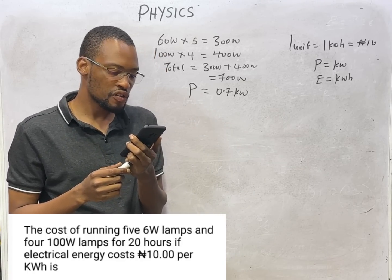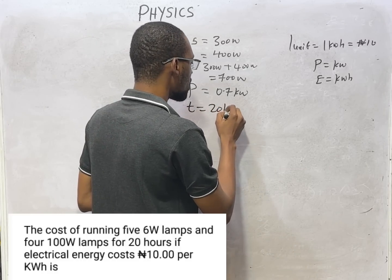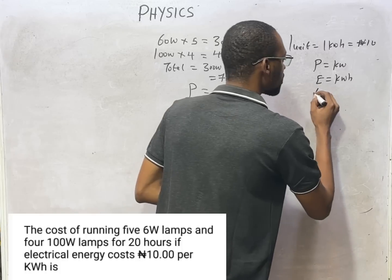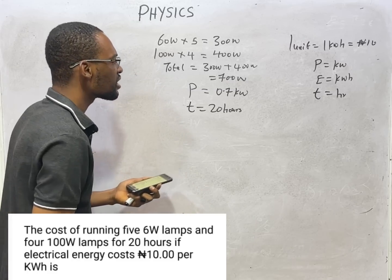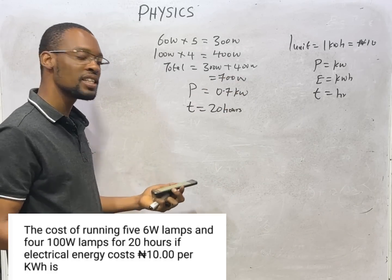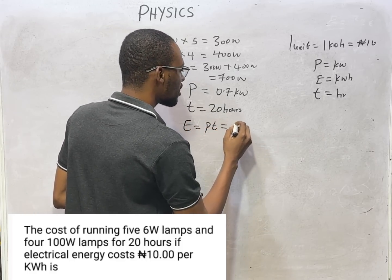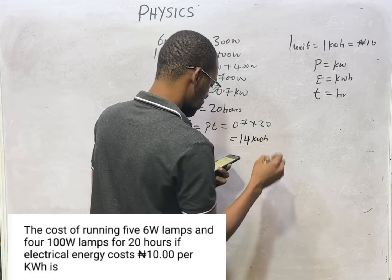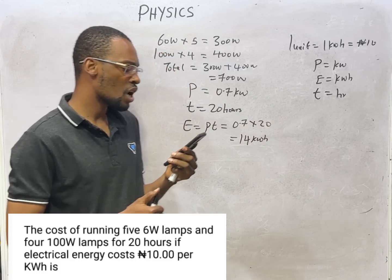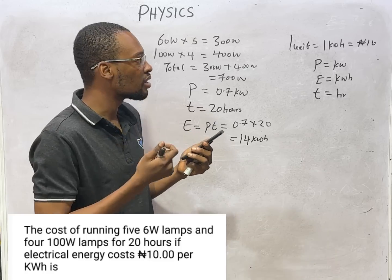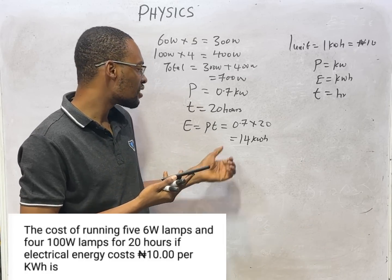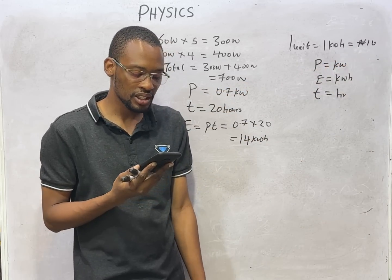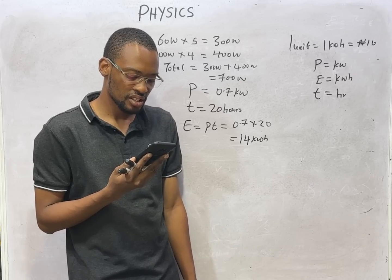The purpose of gathering all this is to solve for the energy. The energy consumed is power times time: 0.7 times 20, which gives us 14 kilowatt hours. If 14 kilowatt hour is the energy consumed, and we are told the energy costs 10 Naira per kilowatt hour, the cost is 14 kilowatt hours times 10 Naira, giving 140 Naira. That is the cost of running the electricity for this person.